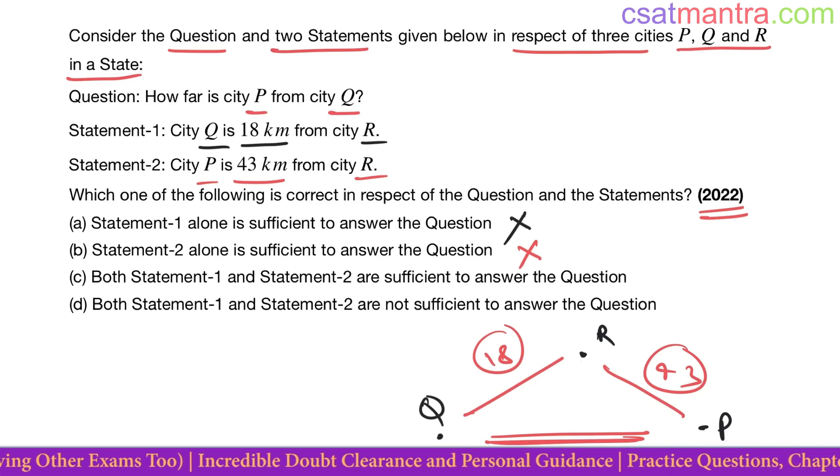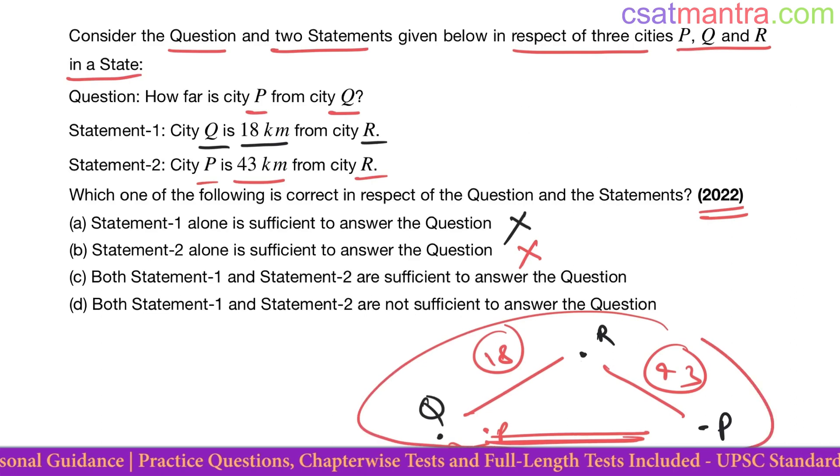We do not know the directions of P, Q, and R. If P is somewhere here, then the distance would be something else. Directions need to be given to find out how far city P is from city Q.